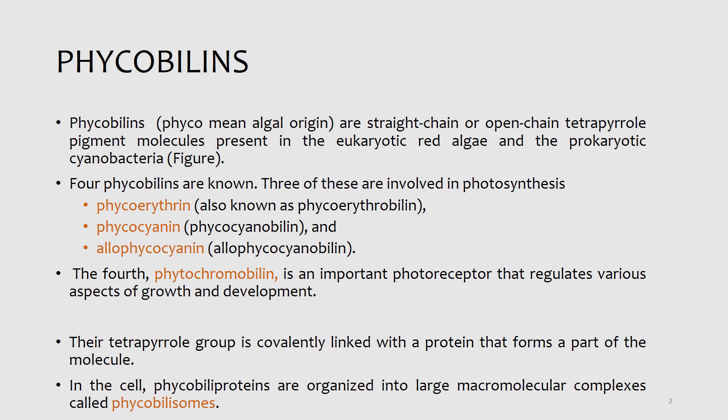The second type of pigments, which are generally known as phycobiliins, are straight chain or open chain tetrapyrrole pigment molecules present in the eukaryotic red algae and prokaryotic cyanobacteria. The prefix phycobiliins designates pigments of the algal origin. Four phycobiliins are known, and three of these are involved in photosynthesis.